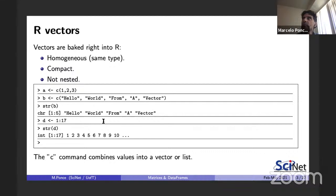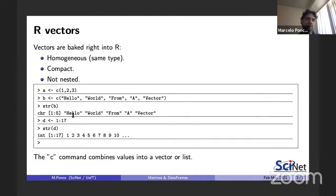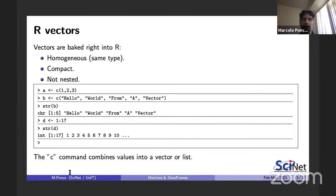Vectors are also compact and not nested, meaning you cannot have a vector inside a vector — in contrast with a list, where you can have nested lists as we saw in assignment one. Examples of vectors: they can be defined by the operator `c` in R, can be numbers or strings. You can get the type using `str()`, or define with operators like the colon to get a range from 1 to 17. It's just one type for all elements.